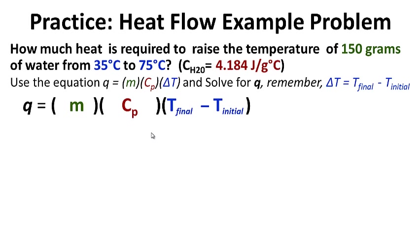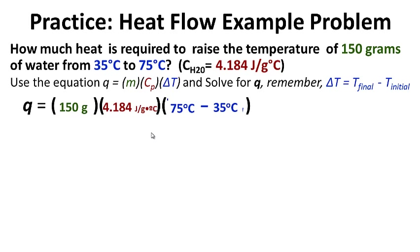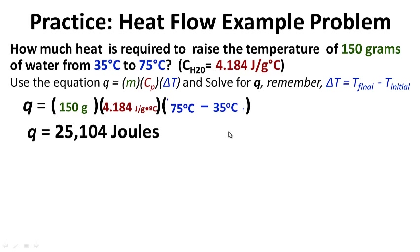Let's use our equation and start considering what we know. We know we have 150 grams of water. The specific heat of water is always 4.184 — that will never change. We want to raise it to 75 degrees Celsius — that's the final temperature — and it started at 35 degrees Celsius. Solving for Q, we get 25,104 joules of energy needed to raise 150 grams of water from 35 degrees Celsius to 75 degrees Celsius.